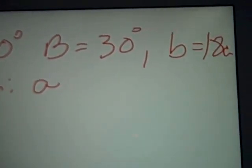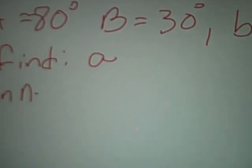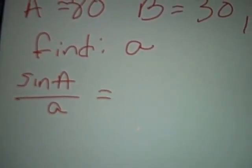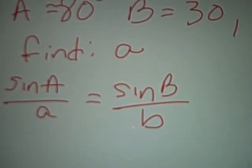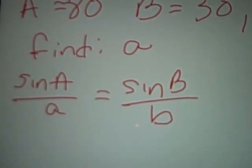So we just plug straight into the formula. We take sine of A over little a equal to sine of B over little b because that's what they gave us. We don't necessarily need to write c right now.